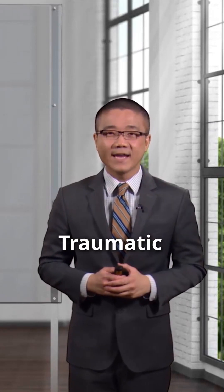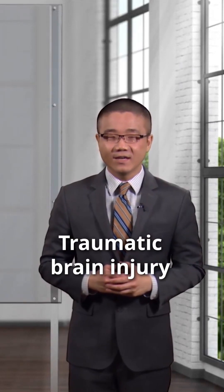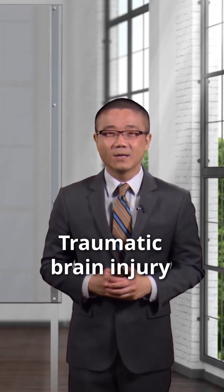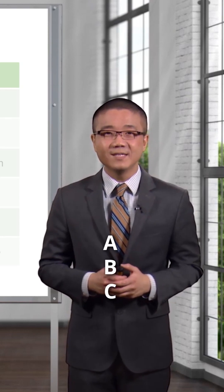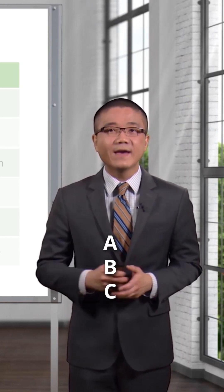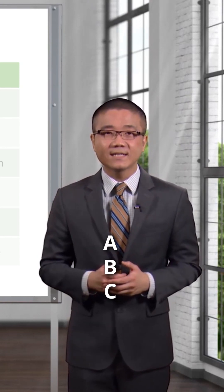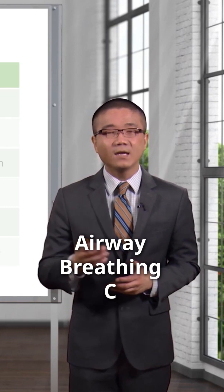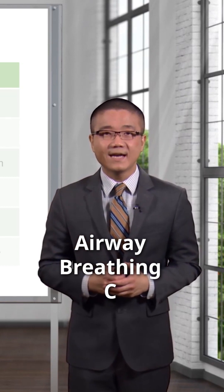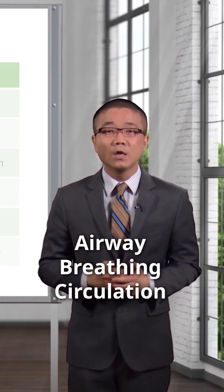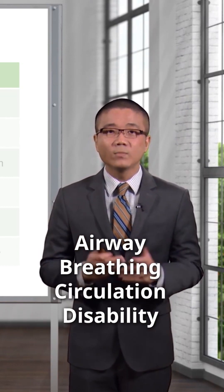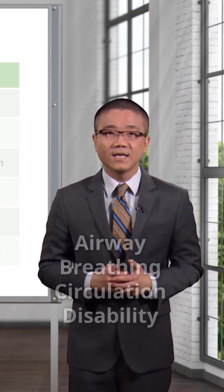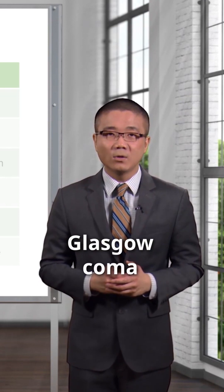Thanks for joining me on this discussion of traumatic brain injury under the section of trauma. Always begin with the ABCs. Now that you've ascertained an intact airway, a breathing patient, and a patient who has intact circulation, we move to the D of disability where we ascertain a Glasgow Coma Scale.